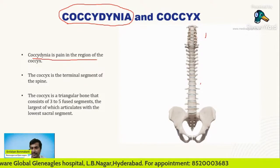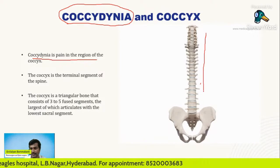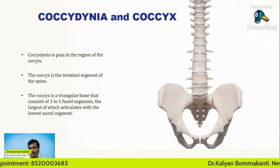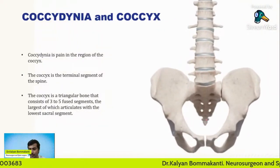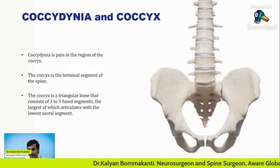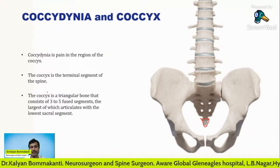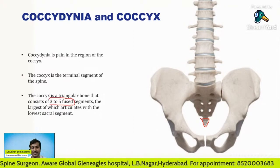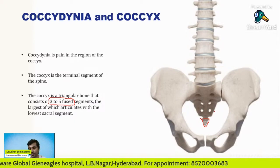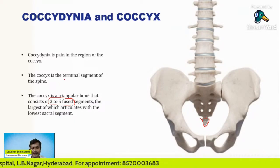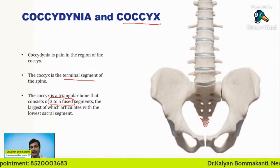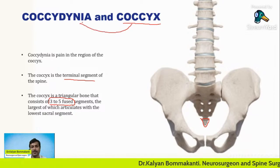See this — this is our vertebral column. The lowest part of the vertebral column is a triangular piece of bone. This in turn is made up of three to four or five small segments of bone. This triangular piece of bone, present in the terminal segment of the spine, is known as the coccyx. And pain in the coccyx is known as coccydynia.